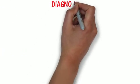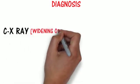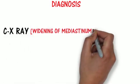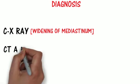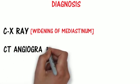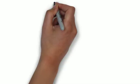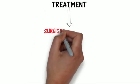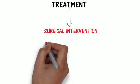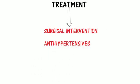Now let's look at the diagnosis. On a chest x-ray there is widening of the mediastinum. We can also diagnose it with other modalities like CT angiogram or magnetic resonance angiography. Treatment involves surgical intervention and the use of antihypertensives to decrease blood pressure to a safe level.